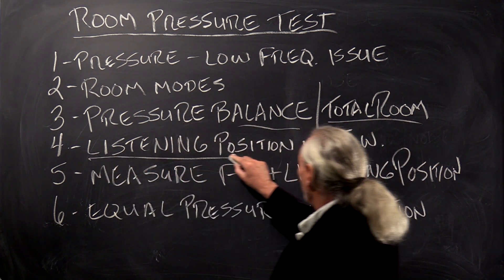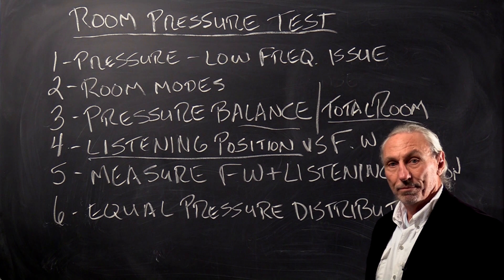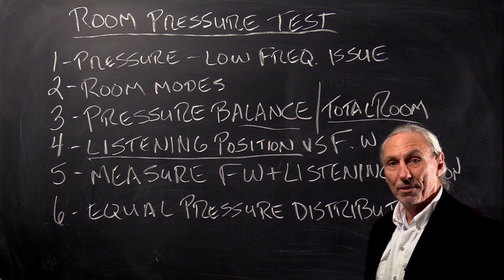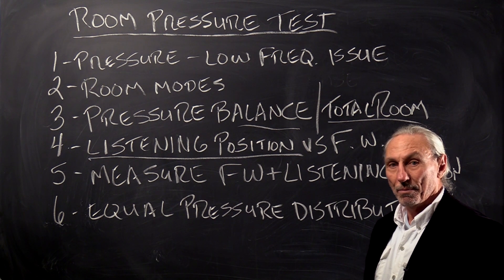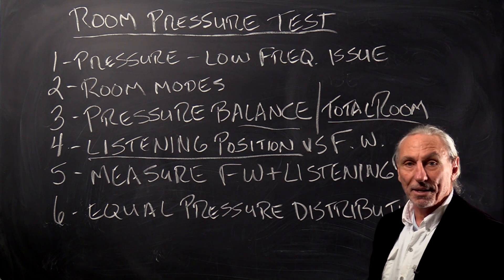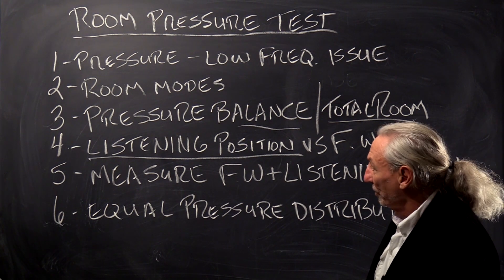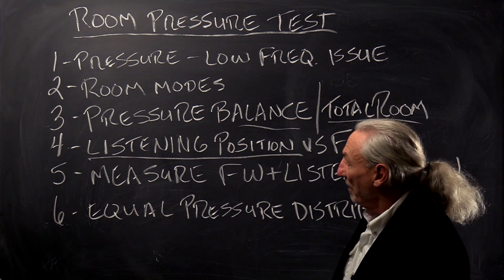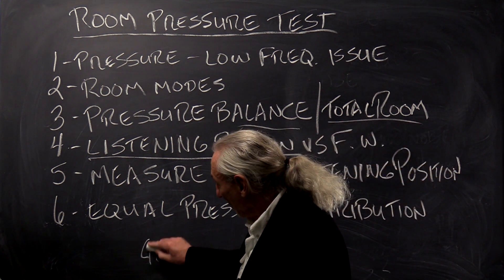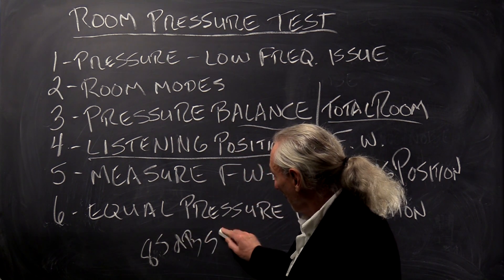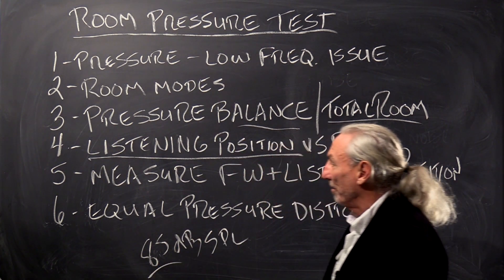Sit in your listening position and take a reading, just a pressure reading. You can use just a standard decibel meter, pressure measuring meter, dB meter, whatever the term is. You can get them at the app store like a dollar to download one. So just sit and listen to your favorite music, and maybe you're going to get a reading of 85 dB SPL. All right, so let's take that number.